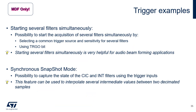Several filters can be acquired simultaneously by selecting a common trigger source and sensitivity for several filters. A simple option is to select TRGO as trigger source and then set the TRGO bit to 1. Any other common trigger signal can also be used. Note that starting several filters simultaneously is needed for audio beamforming applications. With synchronous snapshot mode, it's possible to capture the last valid sample and the state of the CIC and INT filters using the trigger inputs. This feature can be used to interpolate several intermediate values between two decimated samples.